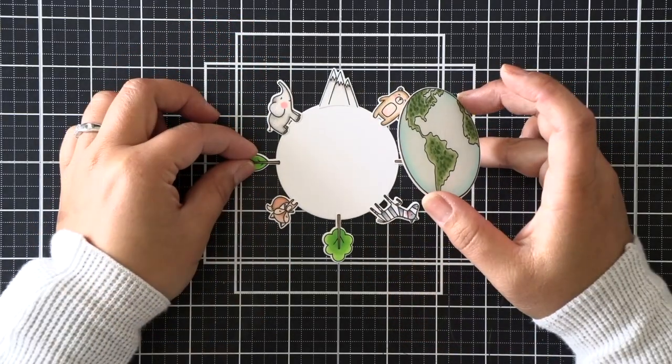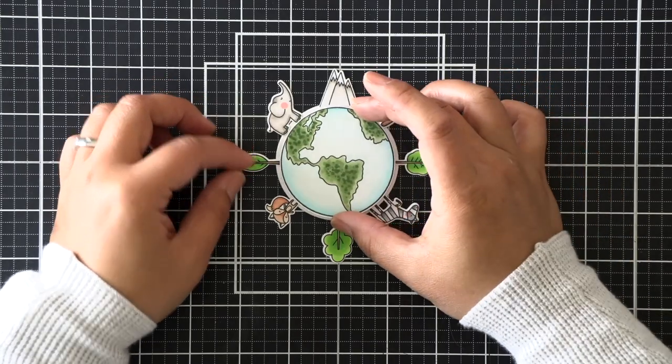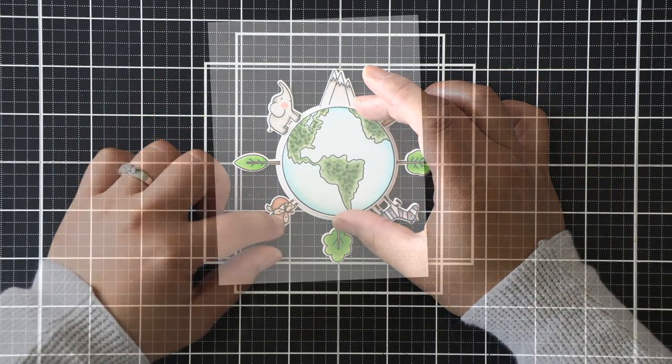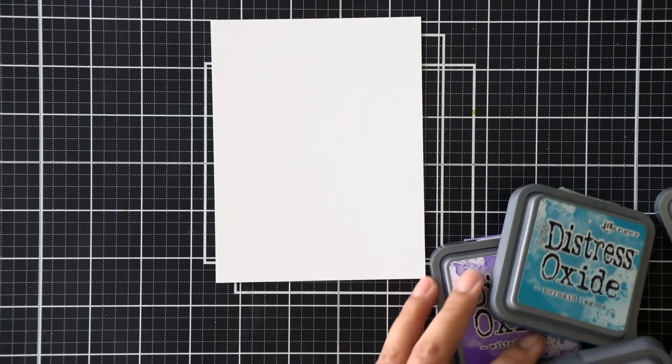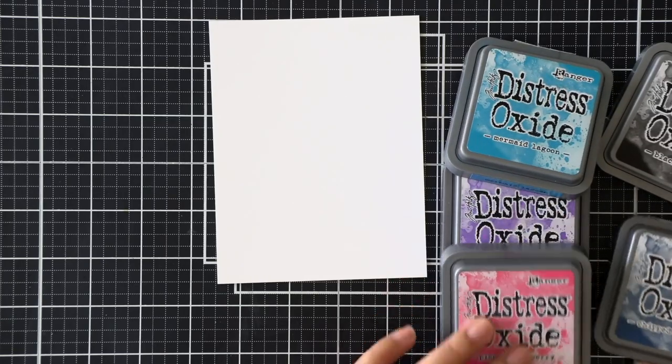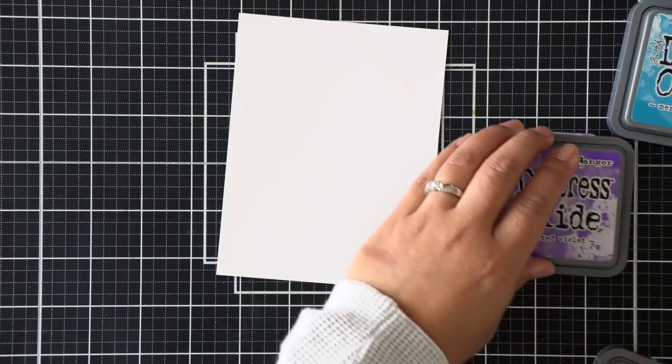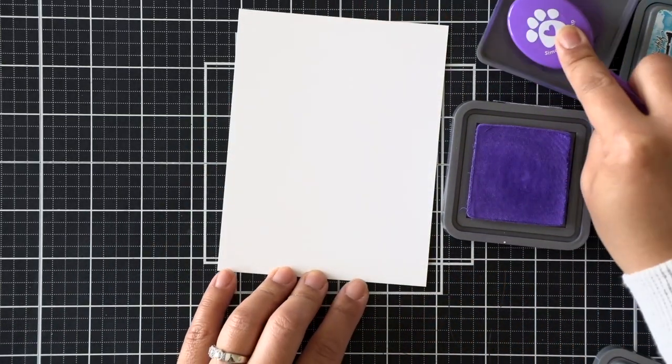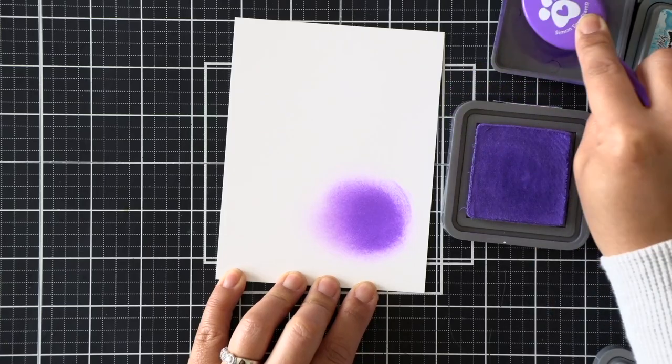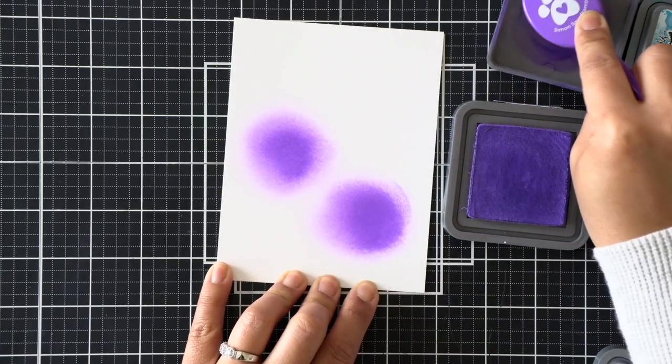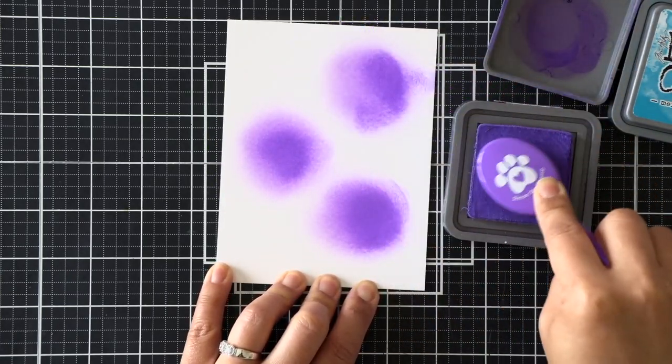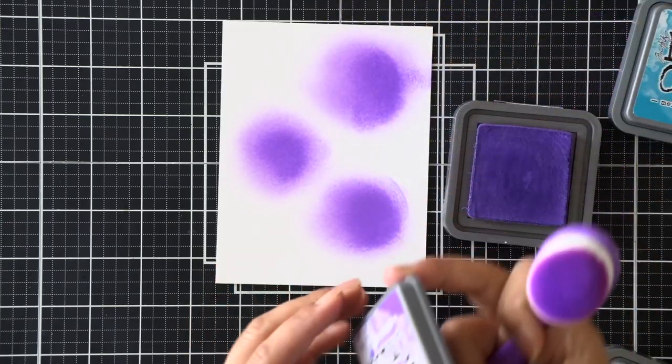Now we're going to create our galaxy background. There are so many ways to do galaxy backgrounds. I recently did a watercolor one, but this time I'm going to use distress oxides. You can also use distress inks or any inks that you might have. I just love distress oxides because they blend together nicely. For this, I recommend choosing two to three really bright, vibrant colors. What I've chosen today is wilted violet, some mermaid lagoon, as well as some picked raspberry.